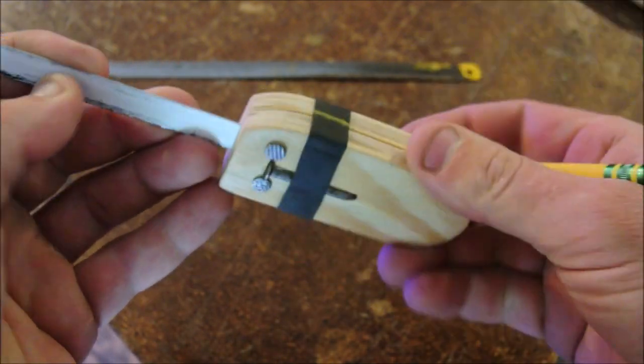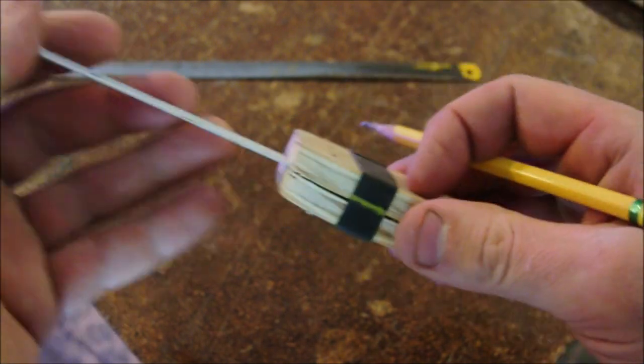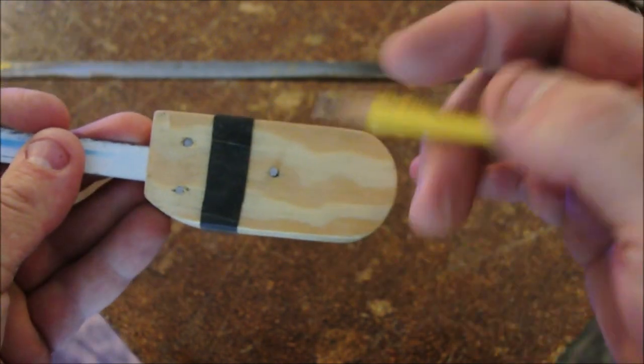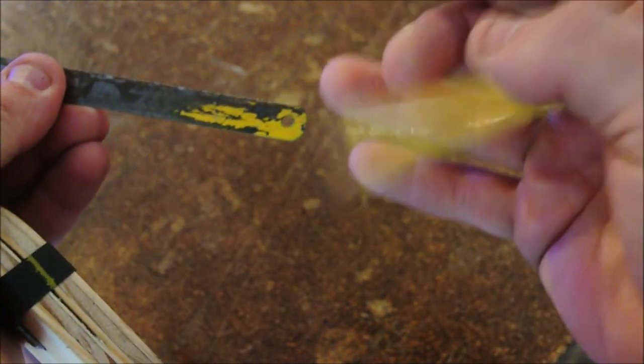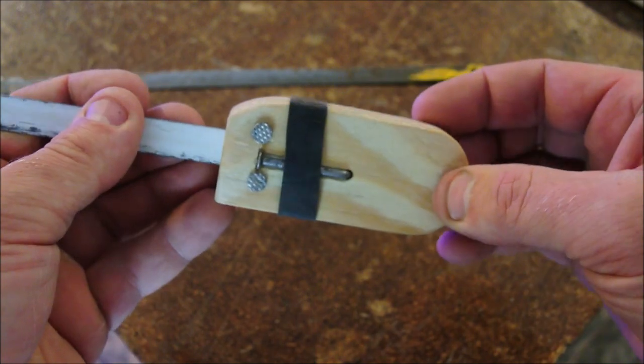These two nails run the whole way through and they keep it from moving, and this nail, the center pin, goes through the hole that's in the hacksaw blade securing it in place.